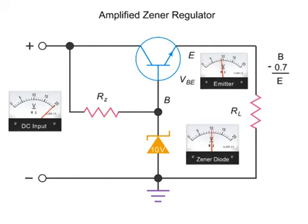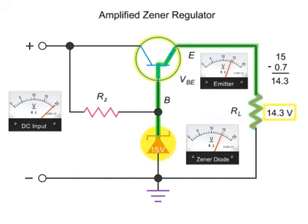With a Zener diode value of 15 volts, you'll have a 14.3 volt output at the emitter and the RL resistor.